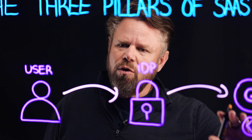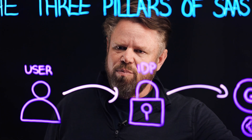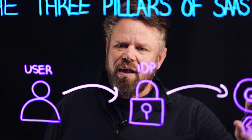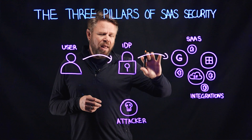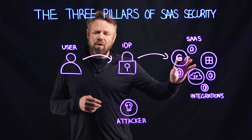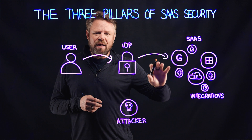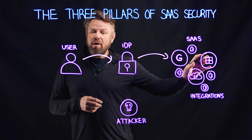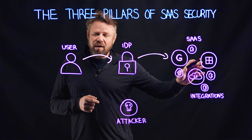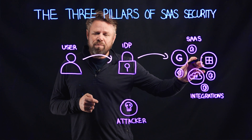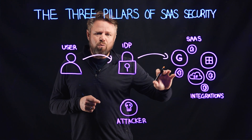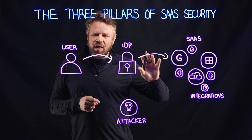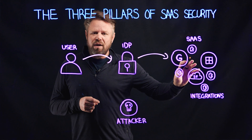So Obsidian looks at this integration management piece of the puzzle and understands what's connected to where, how the data flows, how data may end up from one application into a third application by going through a second application, and understands which of these are critical, who configured them, and the risks associated with them.